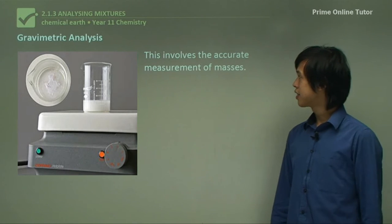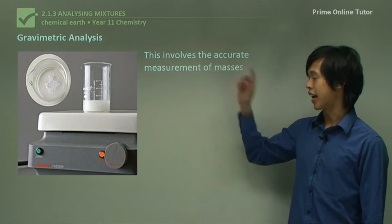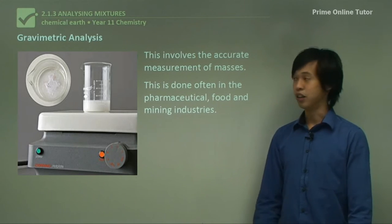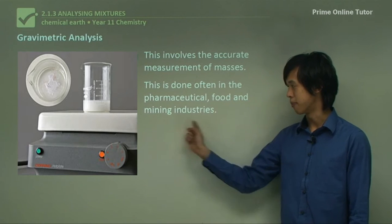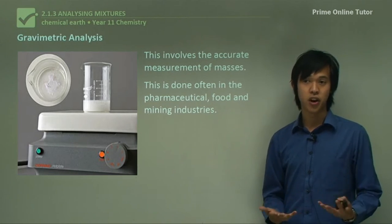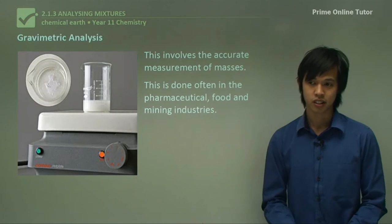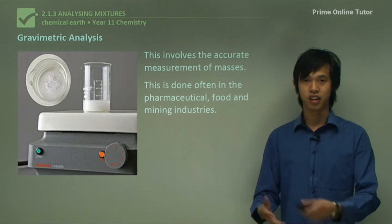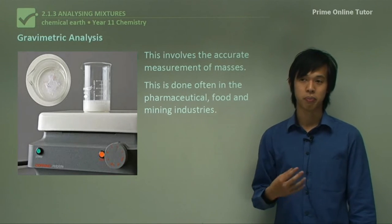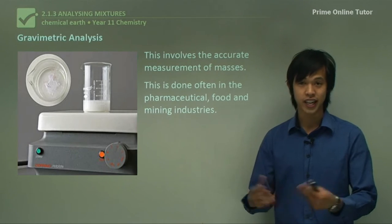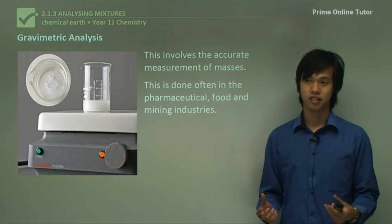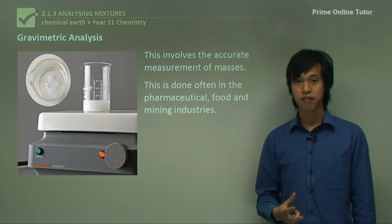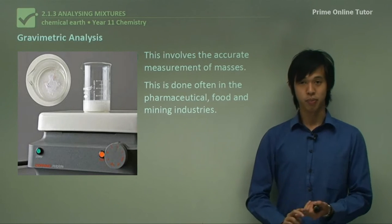So now we look at gravimetric analysis and this involves accurately, and here's a key word, accurately measuring the masses of a particular substance. So we use this a lot in different industries, particularly a pharmaceutical industry, the food industry and the mining industry. And you can see here that each of these really needs to know how much mass it is. For instance, if you're a miner and you promised some company 2,000 tons of iron and you only could produce 1,000, then they're not going to be very happy. And in the pharmaceutical industry this is even more important because if your tablet says 200 grams of drug X and it's actually like 600 grams, then you've probably inadvertently killed someone if you didn't get this right. So gravimetric analysis is super important in these industries for economic and even safety reasons.